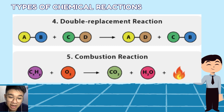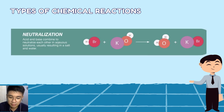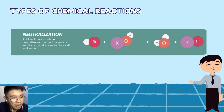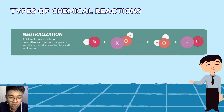Fourth is double displacement or replacement — partners exchange. A was with B, C was with D; after the reaction, D is with A and B is with C. Fifth is combustion — hydrocarbon (CH) plus O2 yields CO2 and water plus heat. A hint: if you see CO2 or H2O as products in an equation, it's automatically a combustion reaction. Sixth is acid-base or neutralization — acid and base in reactants, salt and water as products. Example: HBr + KOH → H2O + KBr.